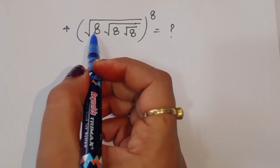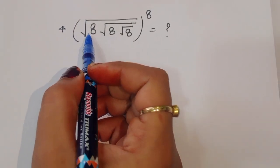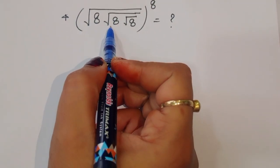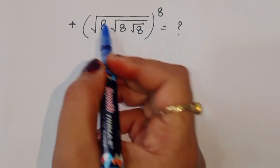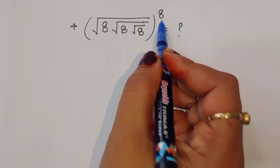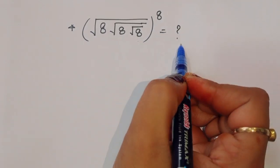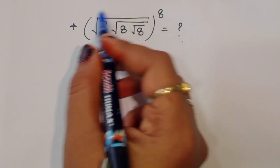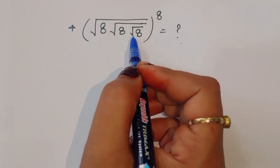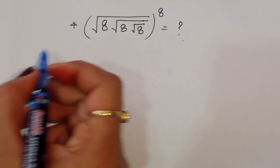The question is: given square root of 8 under square root of 8, square root of 8 power 8 — what is it equal to? We have to find out the value of this. Let's see the solution.